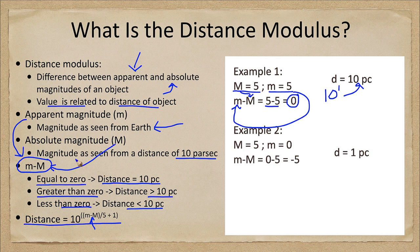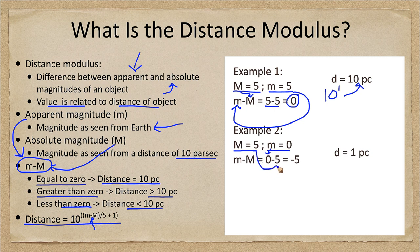We could do other examples of this as well. Let's look at a second example here. Here we have an absolute magnitude still of 5 and an apparent magnitude of 0, so now we take 0 and subtract 5 from it and that gives us negative 5. Negative 5 divided by 5 will give us negative 1.